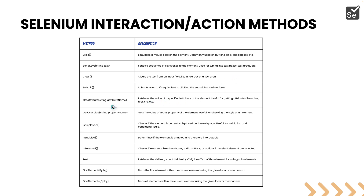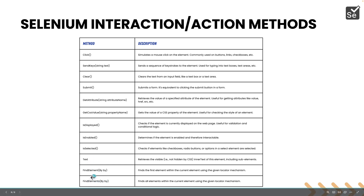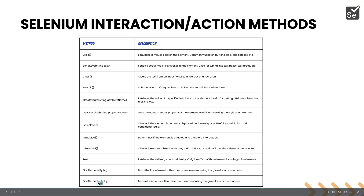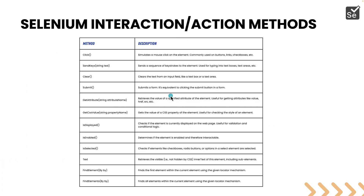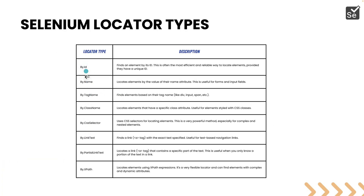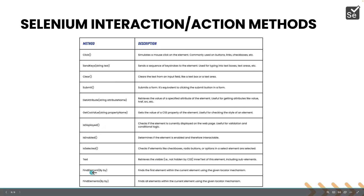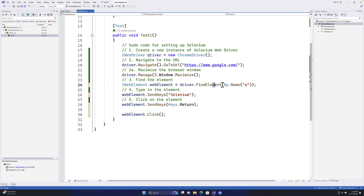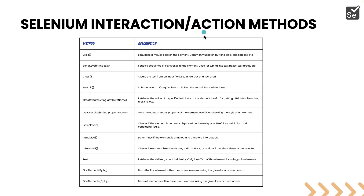Other available methods include CSS value, is displayed, is enabled, is selected, text, find element, and find elements. The find element method locates only the first element within the current element using a given locator mechanism. Find elements (plural) returns all matching elements using the given locator mechanism. The locator mechanism refers to the different By types — such as By.Id, By.Name — which are passed into find element. We already saw this in our code when we used By.Name with 'q' to find the search text box.